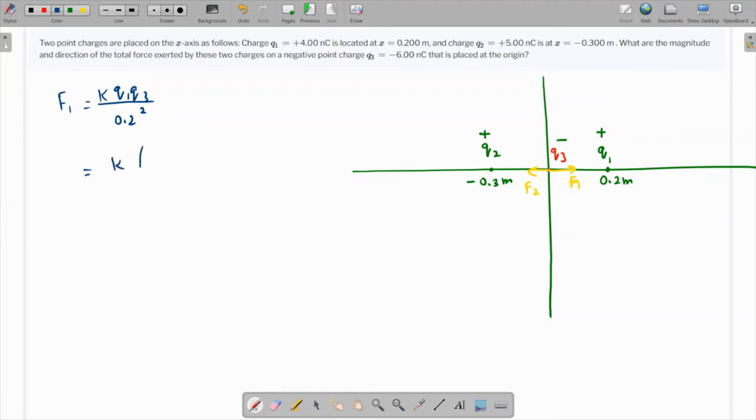Q1 times q3. Q1 is four nano coulomb, q3 is six nano coulomb. Nano and nano will become 10 raised to minus 18 over 0.04 because 0.2 squared is 0.04. This is going to be 24 over 0.04 which is 600. We are getting 600k times 10 raised to minus 18.